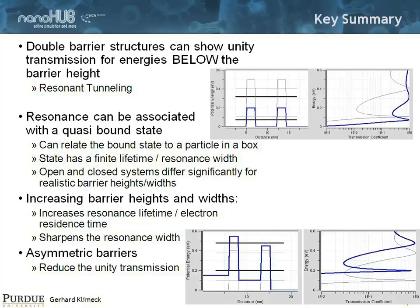The key summary: double barrier structures can show unity transmission for energies below the barrier height — resonant tunneling. If you just had two classical barriers like two resistors, you'd double the resistance, but here you have perfect transmission as if there's no resistance. Resonances are associated with quasi-bound states inside the box, related to the particle-in-a-box problem. States have finite lifetime or resonance width. Increasing barrier height and width increases the resonance lifetime and sharpens the resonance width. Making the structure asymmetric reduces unity transmission to less than unity.